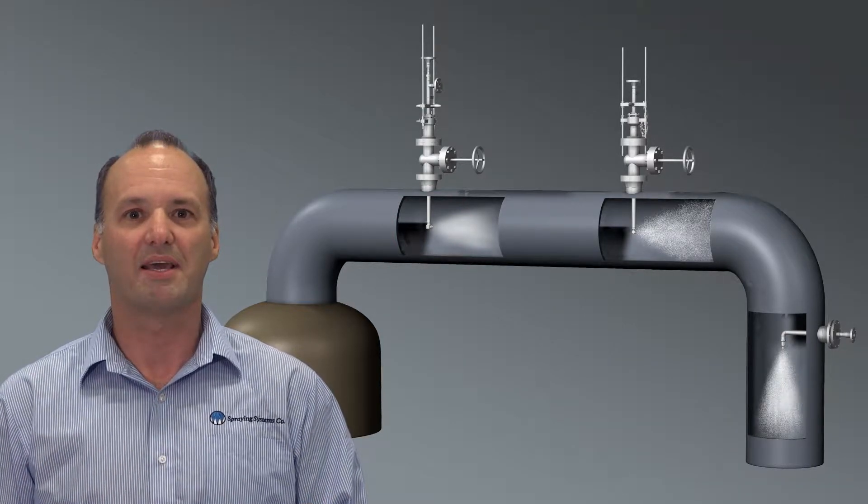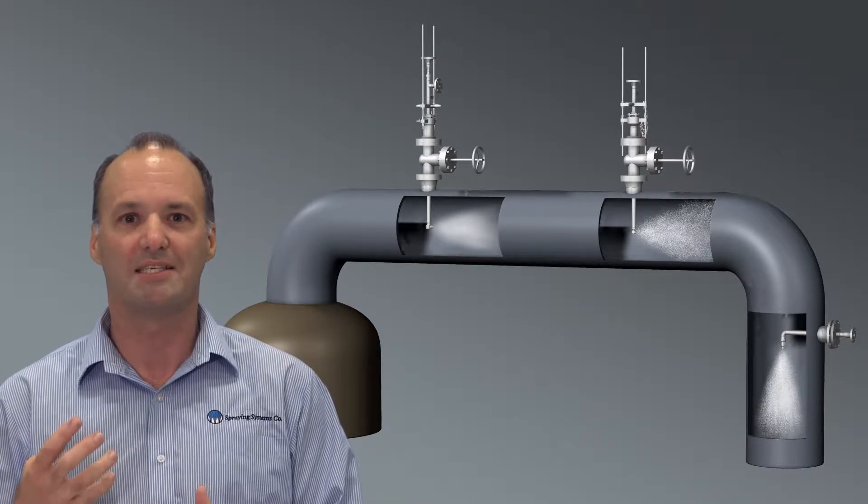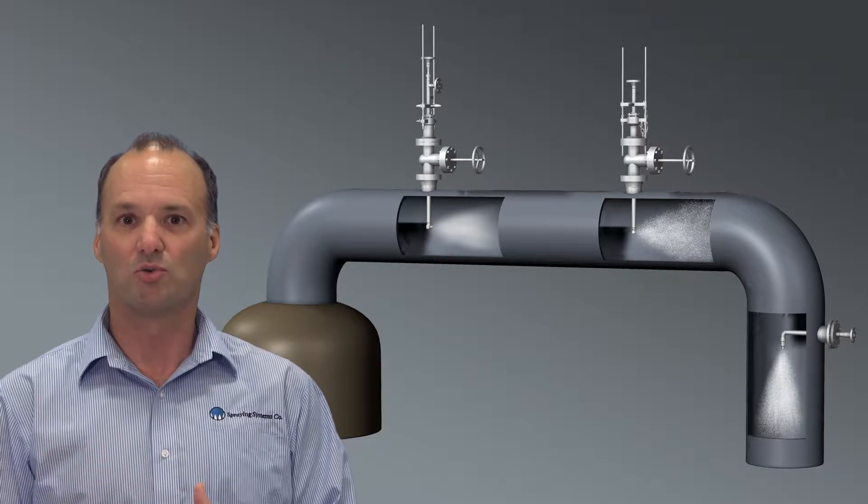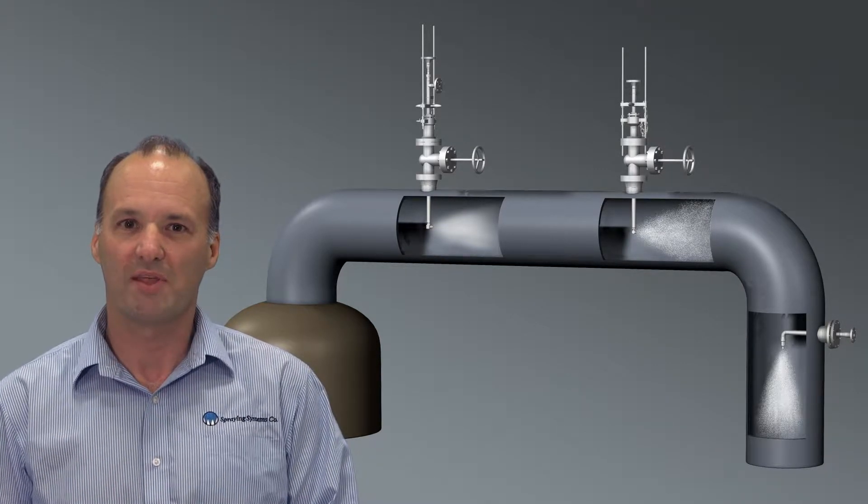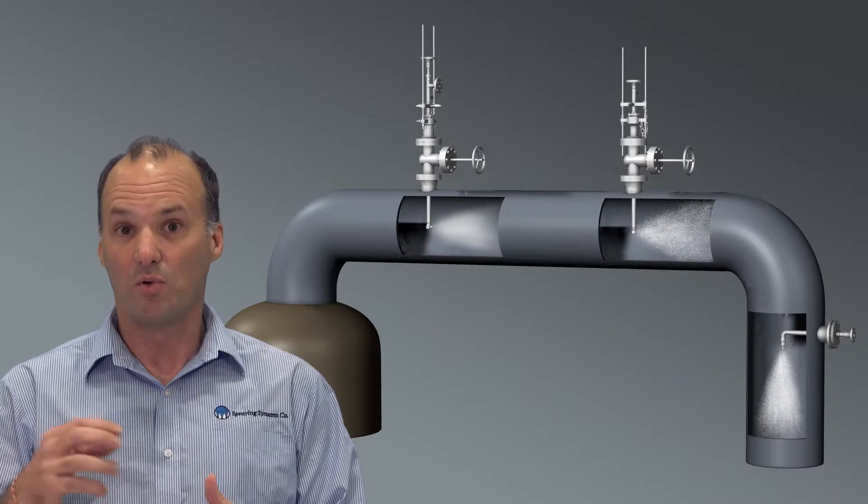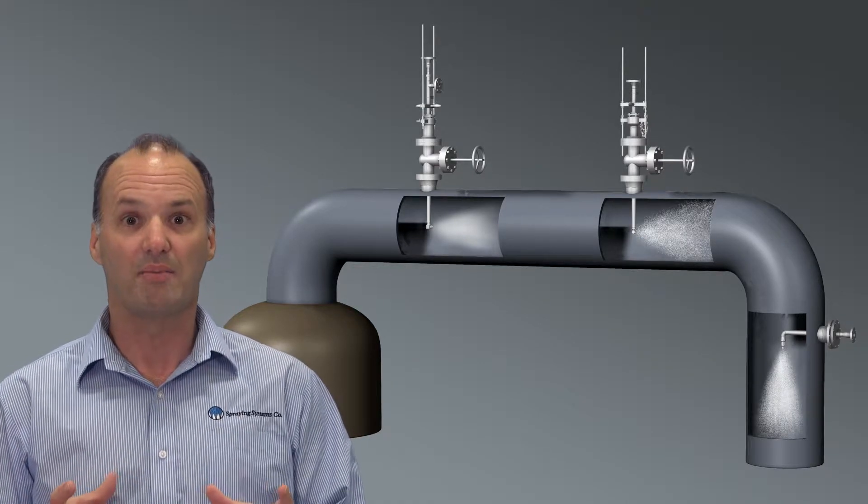In most situations, the amine is metered into a steam line that then goes through a quill into an overhead line. But what happens to that amine? Does it go in in slugs, and does it atomize?